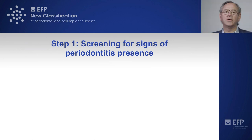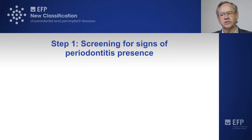Let's go step by step through these key elements for the staging and grading of our periodontitis patients. The first step is to identify the patient who is suspect of having periodontitis — this step one is basically the screening for signs of periodontitis presence.